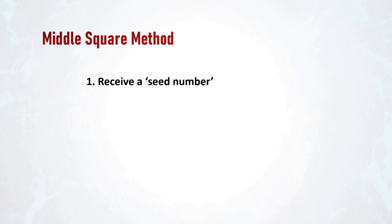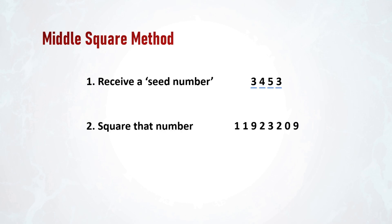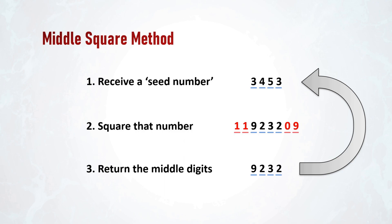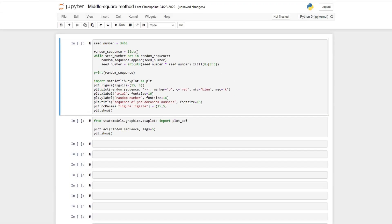Let me show you an example algorithm called the middle square method. The algorithm is given a seed number, which can be any arbitrary number — for example, with four digits. Then it squares that number, and the result is an eight-digit number. Then it drops the first two and the last two digits, and gives us what remains as our first generated random number. Now we can reiterate this algorithm, take the new number as a new seed number, and generate more random numbers. This little code in Python does that for us and generates many more random numbers.